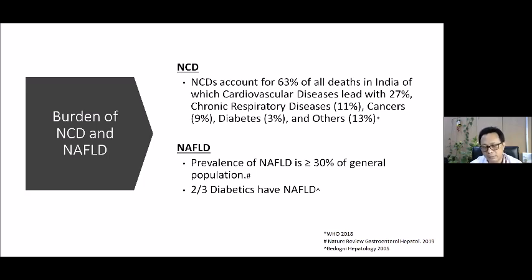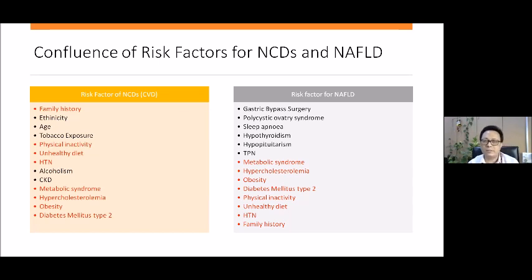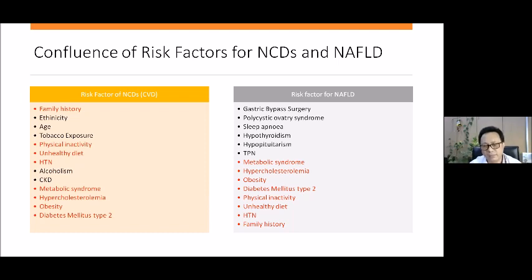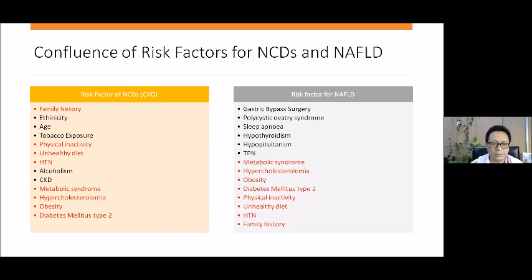Two-thirds of people with diabetes usually have NAFLD. So if you take care of NAFLD, you are also taking care of a large proportion of diabetes patients. The confluence of risk factors for NAFLD and NCDs is quite significant, with particular emphasis for NAFLD on metabolic syndrome, hypercholesterolemia, obesity, diabetes, physical inactivity, unhealthy diet, hypertension, and family history. Many risk factors are common, so when you address them — for example by becoming physically active — it benefits not just the liver but other NCDs as well. This is a win-win situation.